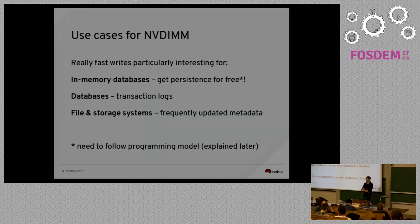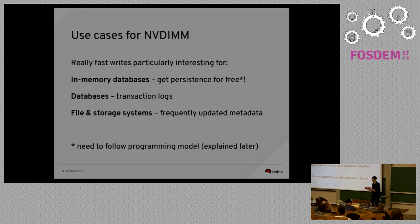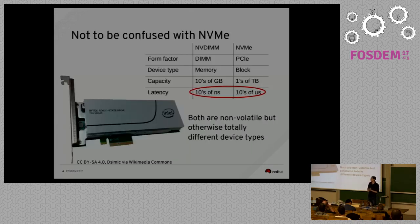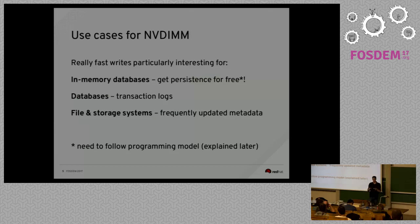There are other applications like databases or file systems that have transaction logs and other types of metadata that need to be written very frequently, and that's performance-critical. Doing that on disk involves a lot of latency. Being able to do that on NVDIMM with very low latency speeds up that performance-critical part of the file system or database significantly.